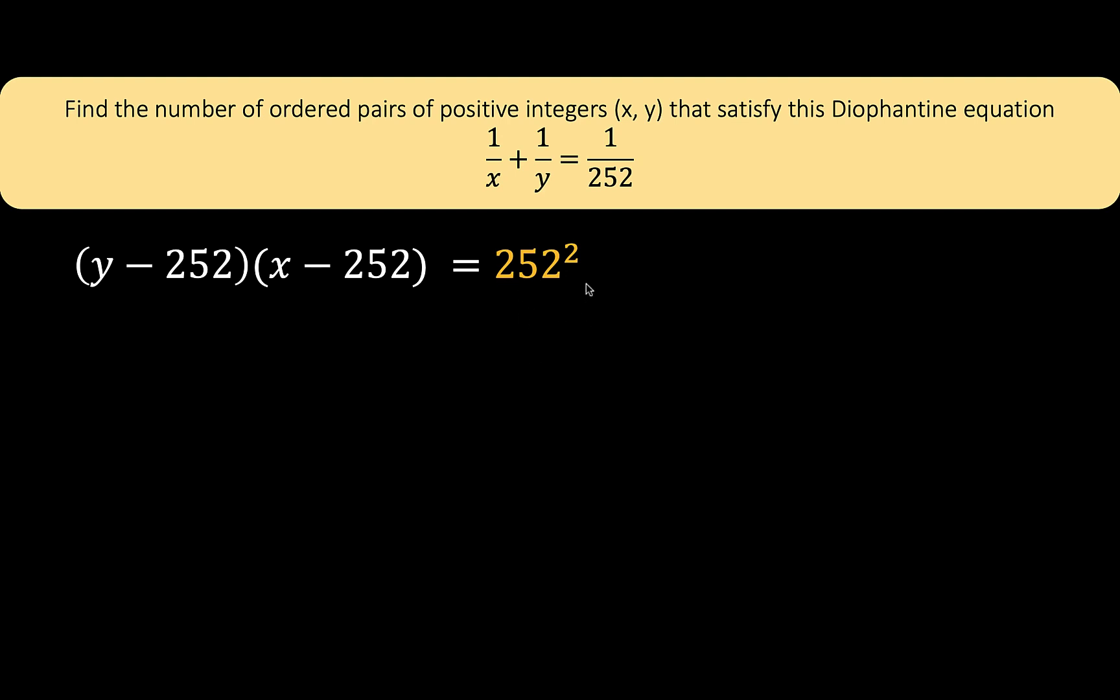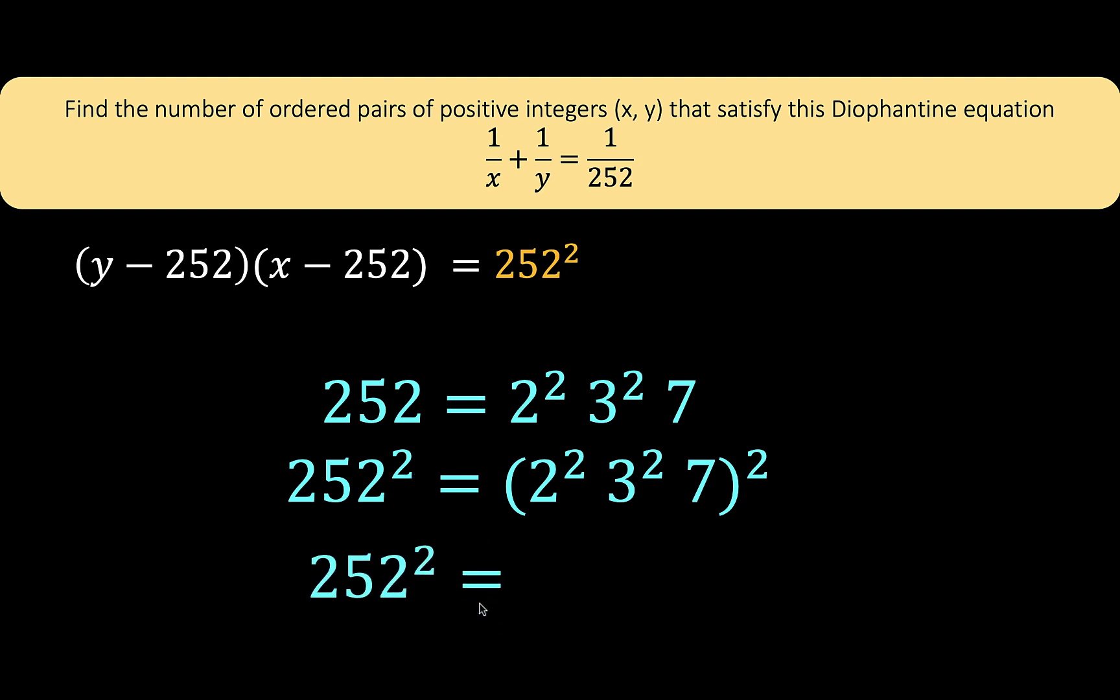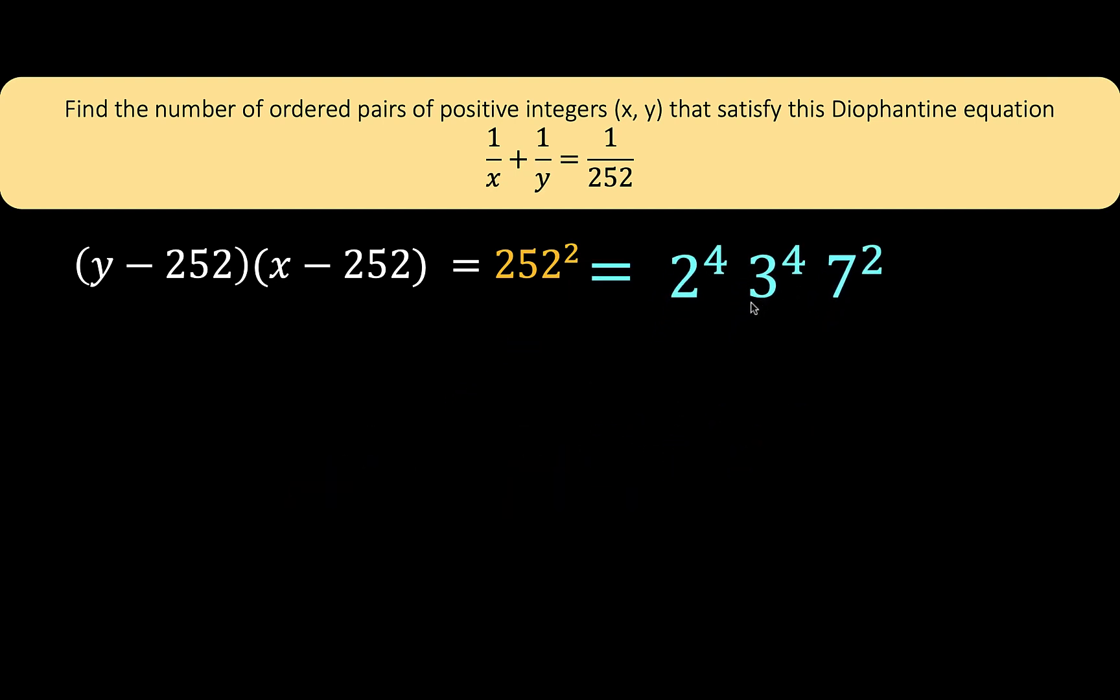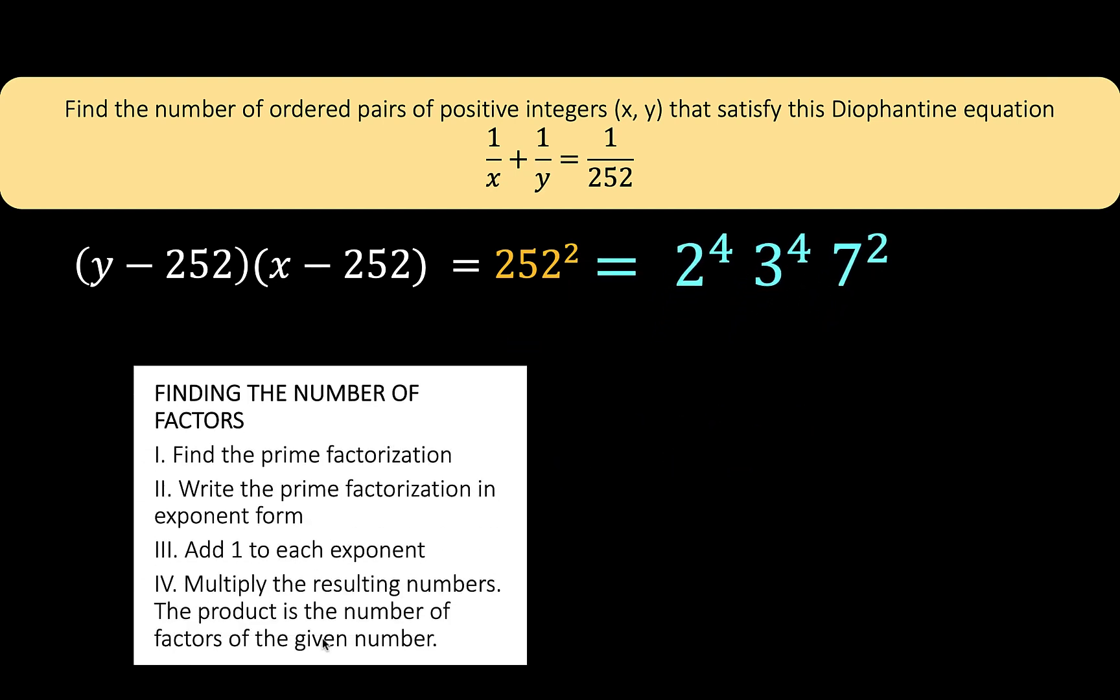Now, that means we can find the number of factors of 252 squared using that procedure. But first, let's find the prime factorization of the base 252, that equals 2 squared times 3 squared times 7. And so, the prime factorization of 252 squared would equal the right side squared. Applying power of power, we now have 2 to the 4th times 3 to the 4th times 7 squared. Going back to this procedure, we get these exponents 4, 4, and 2. We are going to add 1 to each of these exponents and get the product, and we arrive at 75. This means 252 squared has 75 factors.